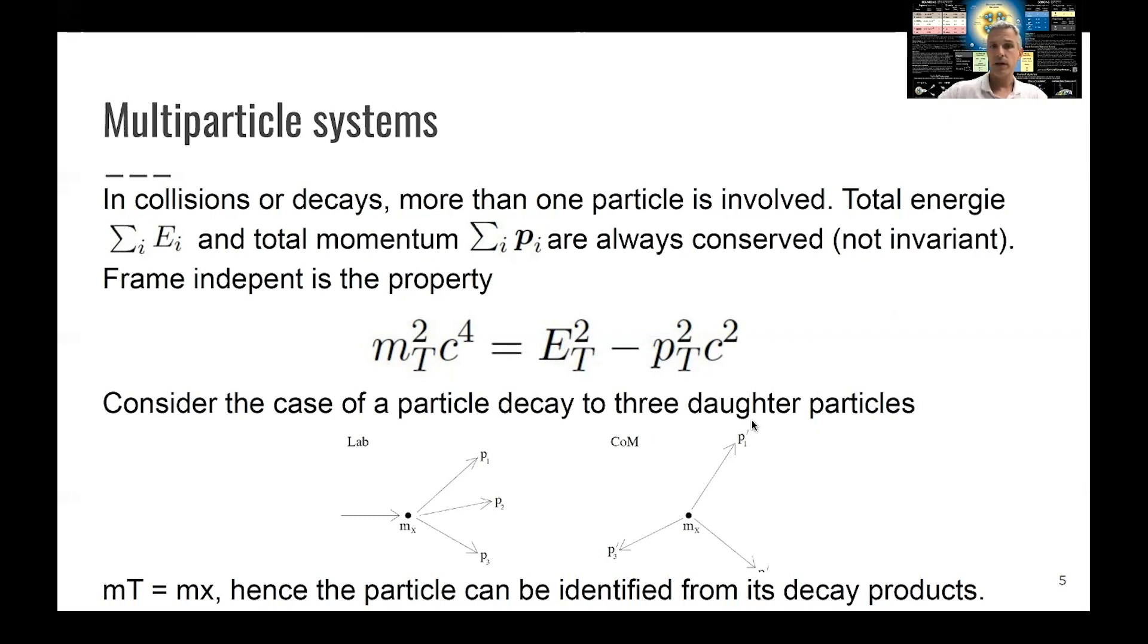We just define this total mass as equal to the energy square minus the momentum square. And then we can consider the two cases of a laboratory frame and the so-called center of mass frame. So in the laboratory frame, we have a particle. It's moving. Now we observe this particle, and then it decays into, in this example, three daughter particles.